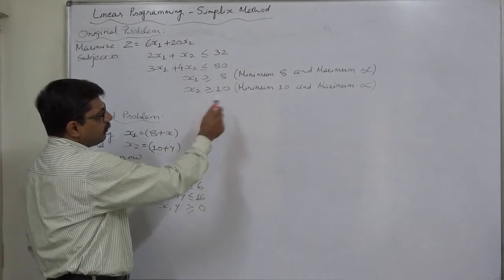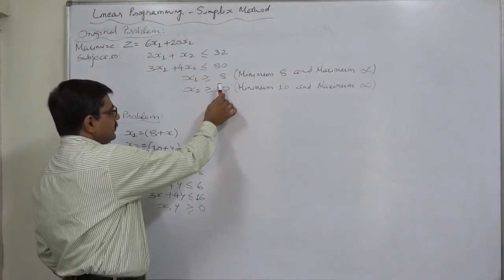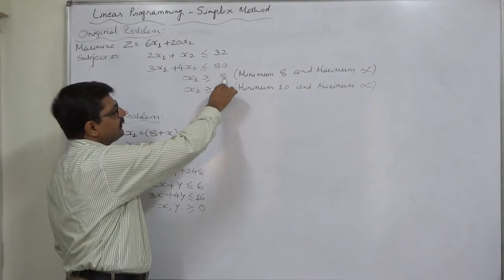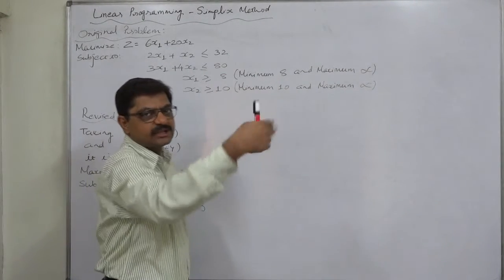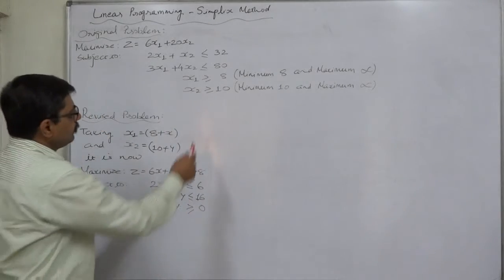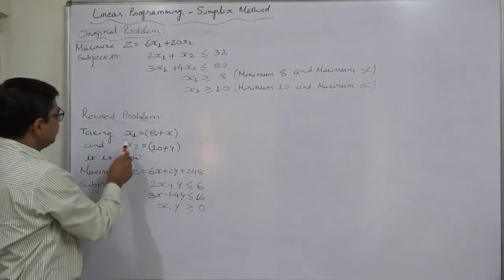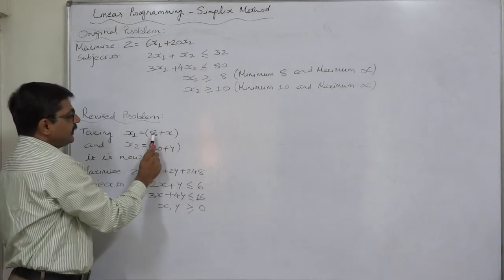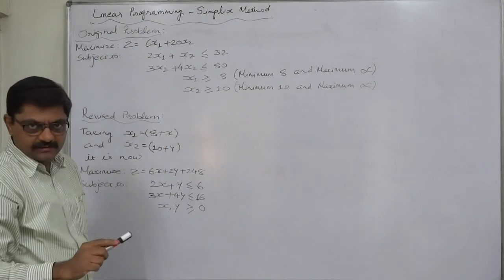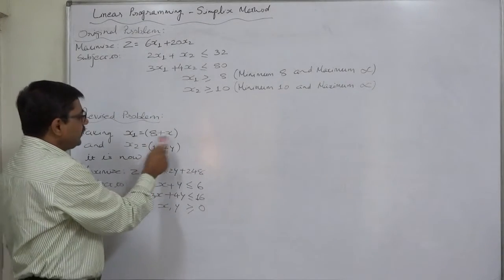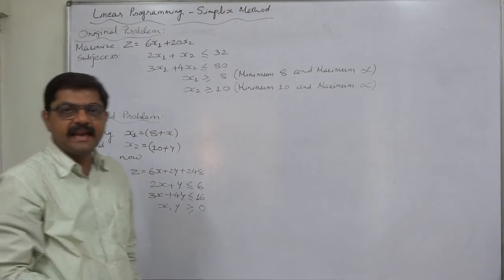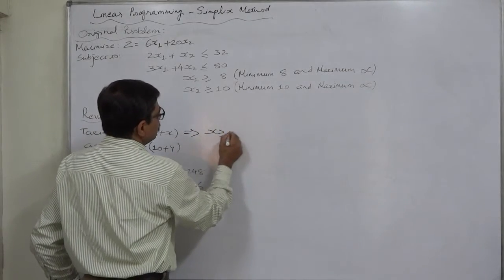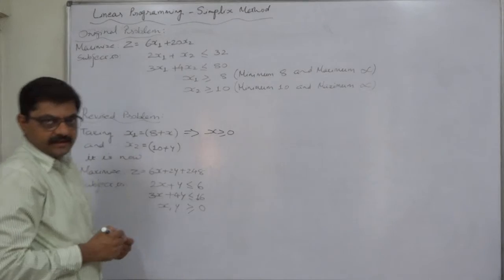In this case x1 greater than or equal to 8 that means the lowest possible value of x1 is 8 and maximum value can be 8 plus anything. Let us take 8 plus x, so x1 becomes 8 plus x and x can take any value from 0 to infinite.